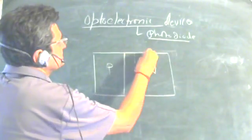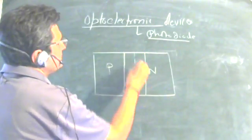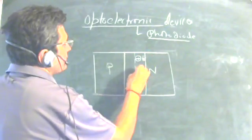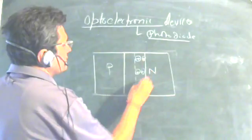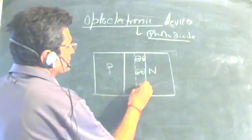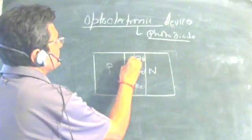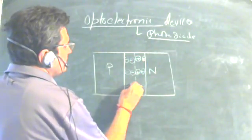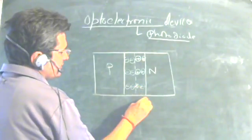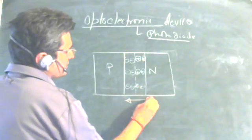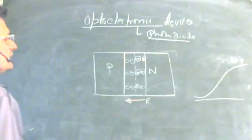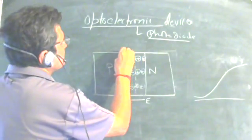On the junction boundary we have the depletion region. You have positive charge on one side and negative charge on the other side. This happens because of the diffusion of the majority carriers, and at equilibrium you have an electric field which leads to a potential barrier.